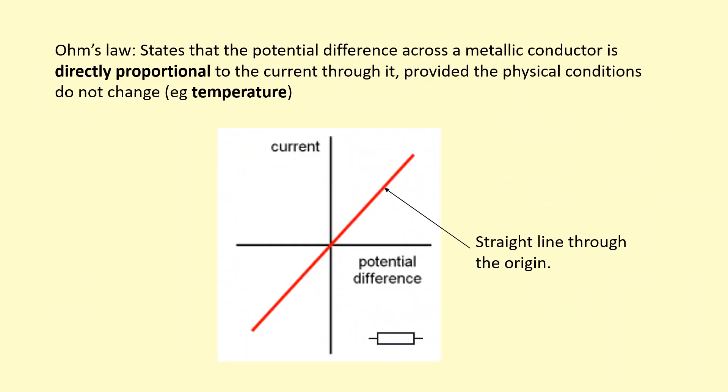We saw that provided the temperature does not change, according to Ohm's law, the potential difference and the current are directly proportional. So if you double one, you should double the other. And this is what you'd expect, for example, with resistors.